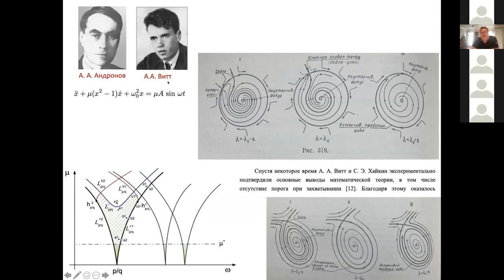You have an Andronov-Hopf bifurcation — the focus becomes unstable and you get a stable limit cycle. On the limit cycle you have a saddle-node, called SNIC nowadays — a saddle-node on an invariant circle. The saddle-node splits into a saddle and a stable equilibrium state, giving you a resonant torus with a stable periodic orbit on it. This occurs within the synchronization zone, known as the Arnold tongue.